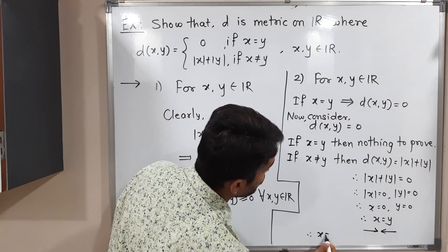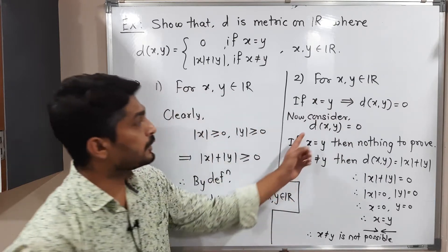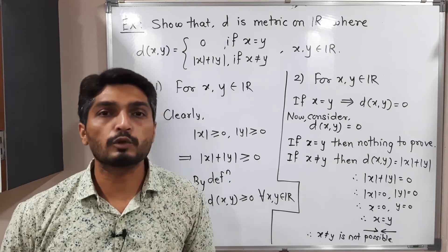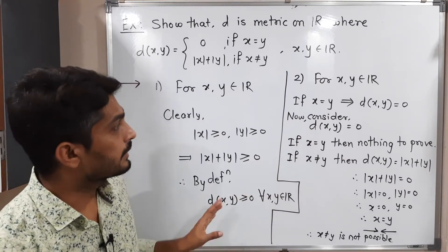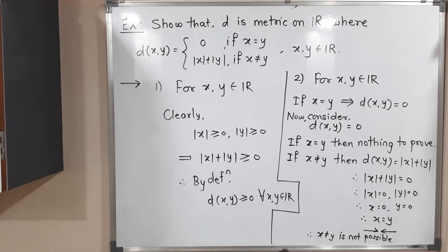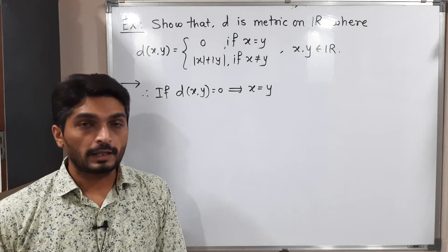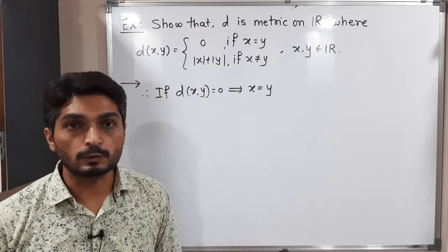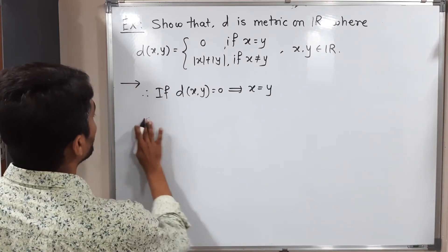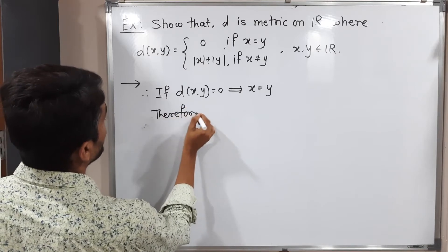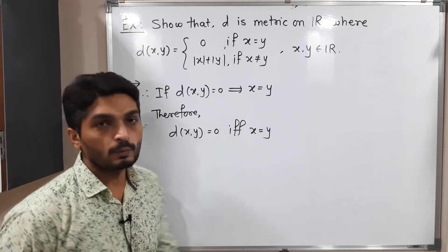Since X ≠ Y leads to a contradiction, X ≠ Y is not possible. When D(X,Y) = 0, the only possibility is X = Y. Therefore, combining both directions, D(X,Y) = 0 if and only if X = Y. This proves the second condition.